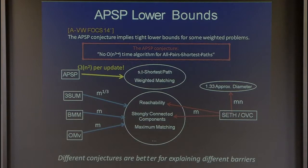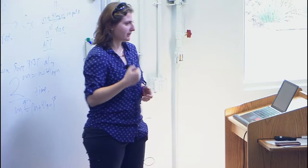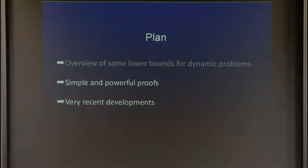For dense graphs, all-pairs shortest paths is equivalent to negative triangle, which is a very simple problem to reduce from. For sparse graphs we don't have such a simple problem, making things harder. We've finished the overview — now I'll give very short and simple proofs, similar to what we've seen before but in a dynamic setting, and then we'll get into recent developments.